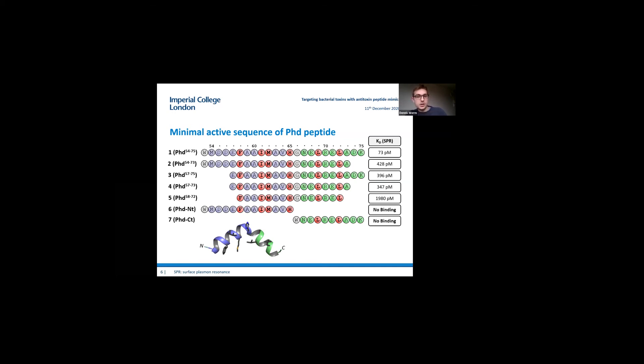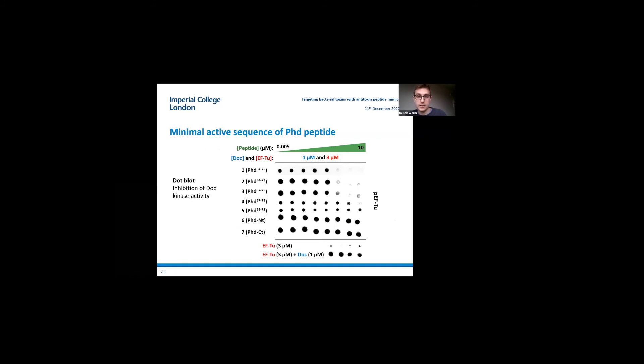We checked the activity of these truncated peptides using a similar assay as the Western blot, but in a dot blot format. We incubated Doc toxin with EF-Tu target and the peptide, then spotted the whole mixture on membrane and checked for phosphorylation of the EF-Tu. The peptides that are truncated on either the N-terminus or the C-terminus are as active as the wild-type peptide, so they are inhibitors of the Doc toxin. But interestingly, the peptides truncated on both sides or the peptide halves were inactive, so they were not able to inhibit the Doc toxin anymore.